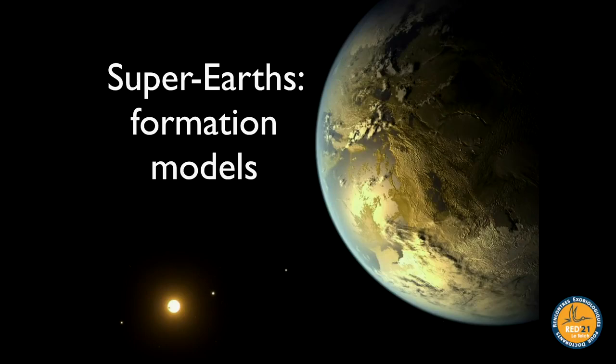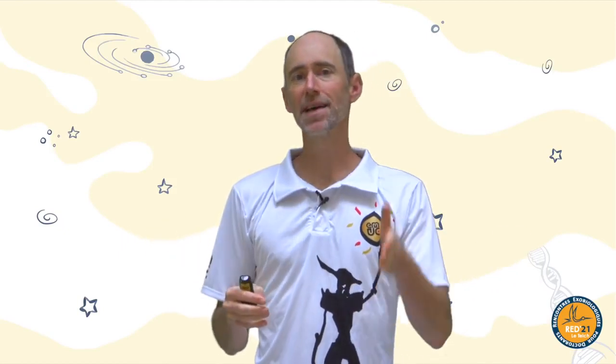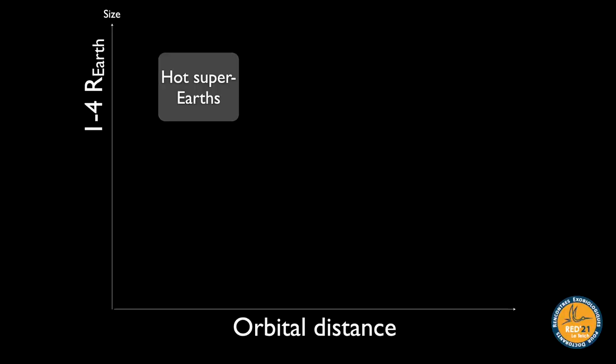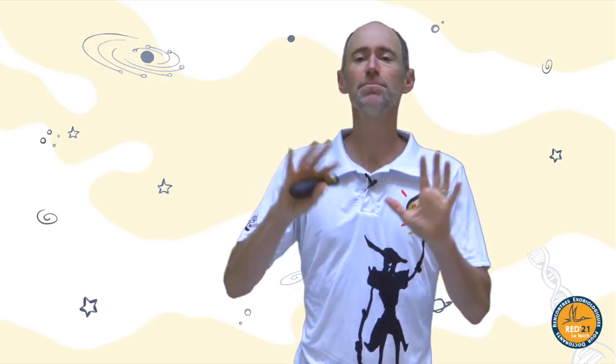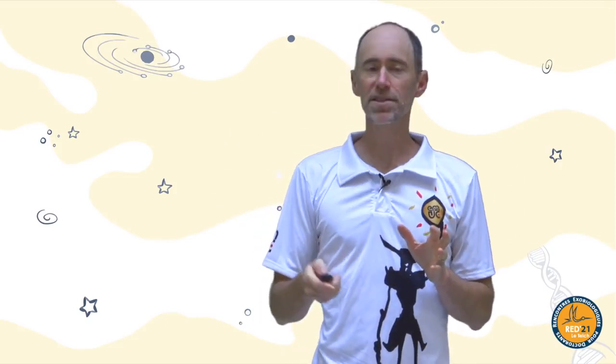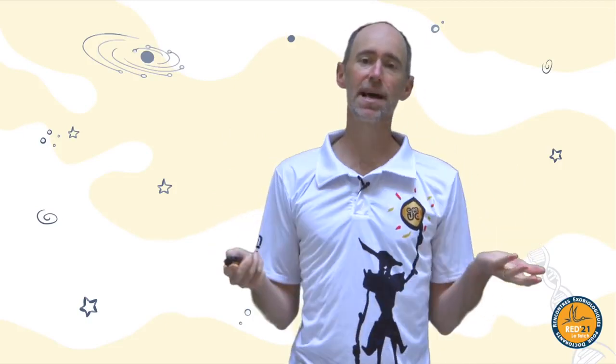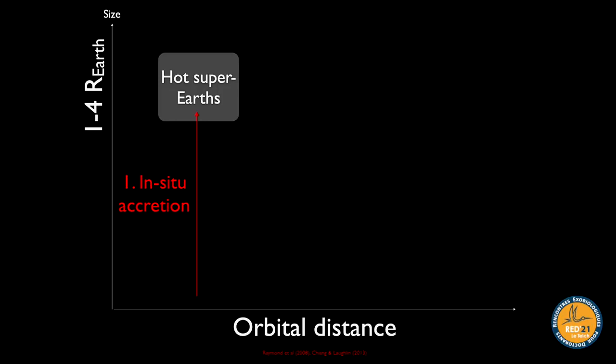Now let's talk about formation models for these close-in, slightly larger-than-Earth-size planets. In conceptual terms, on axes of size versus orbital distance, super-Earths occupy a gray box up there — so how do planets get there? One possibility is they just grew where they are: things bashed together and grew into bigger planets in place. That's what we call in-situ accretion.